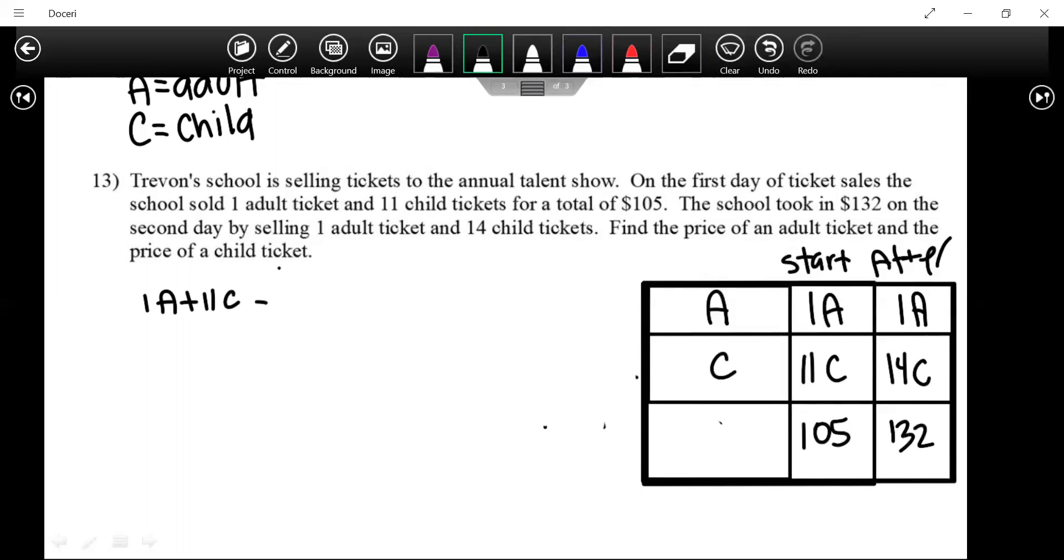1A plus 11C equals 105. Which one do I want to get rid of, the adult or child's ticket? Adult. I'm just going to do the top one. Let's do the top one. Top one by negative: negative 1A, negative 11C, negative 105.